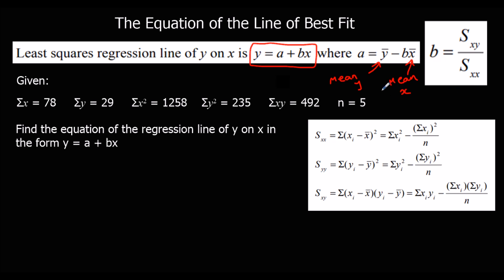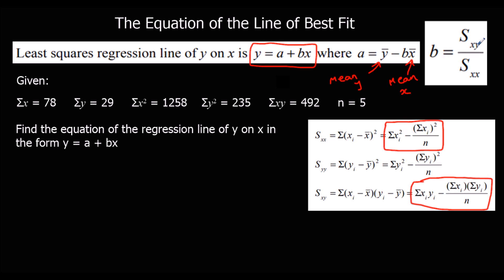We're going to need to work out b first using the formula for Sxy and the statistics we're given. We're also going to need the mean of the y's and the mean of the x's to find a. So one step at a time — let's start with b. To find b we need Sxx and Sxy.